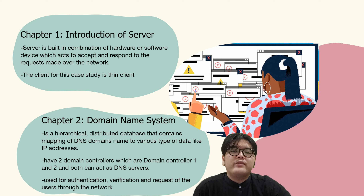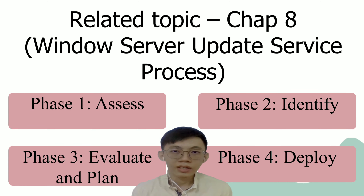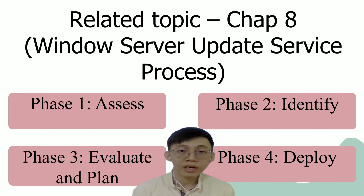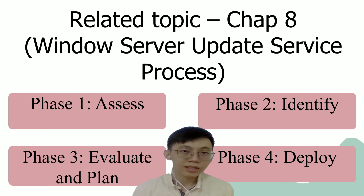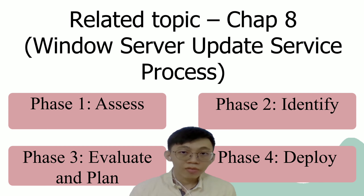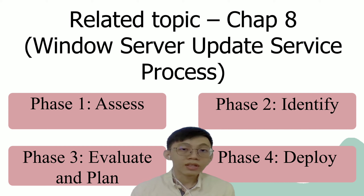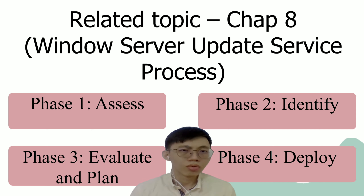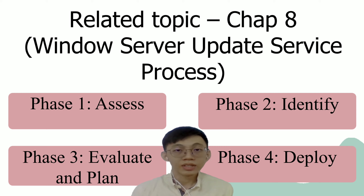The next topic for our case study is Chapter 3 on Windows Server Update Service process. The update management project has four steps: Access, Identify, Evaluate and Plan, and Deploy. For phase one, Access: the Fujitsu team must assess the number of servers and client computers they must update, and a time frame acceptable for deployment. They must also consider computer store, network bandwidth, platform, and product to increase their ways to update, to ensure the process of updating Windows Server Hyper-V runs smoothly.